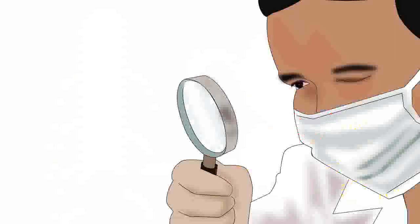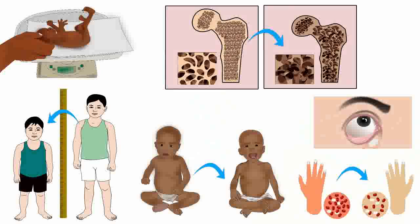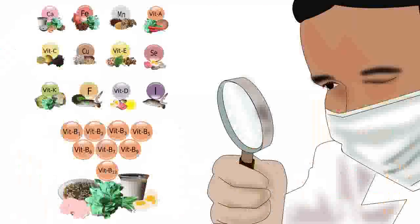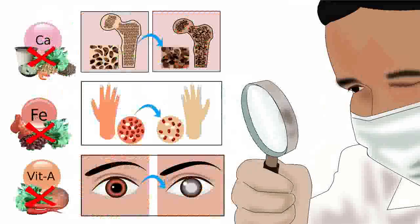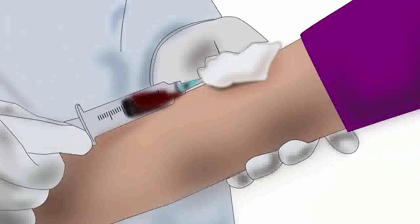Let's discuss the diagnosis of type 1 and type 2 nutrient deficiencies. A type 1 nutrient deficiency is commonly diagnosed in two ways. First, the unique symptoms of the deficiency are recognised. Then the level of the nutrient in the body is measured by a blood test.